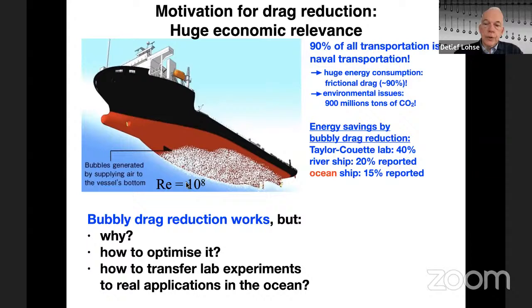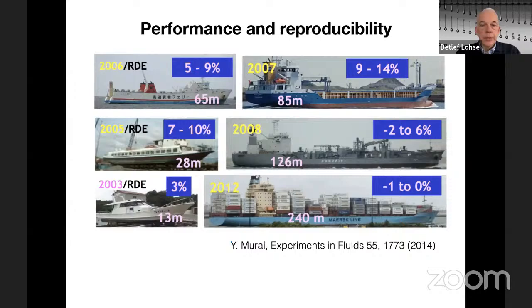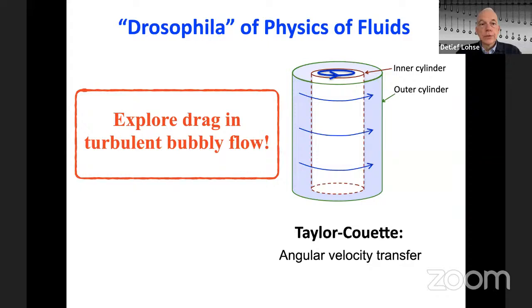Energy savings by bubbly drag reduction are 15% for ocean ships, 20% for river vessels, and in our Taylor-Couette facility we achieve 40%. The key problem is a lack of fundamental understanding of what is going on. Different boats show different drag reductions over the years, so it's not particularly reproducible, and we really need controlled experiments in the lab.